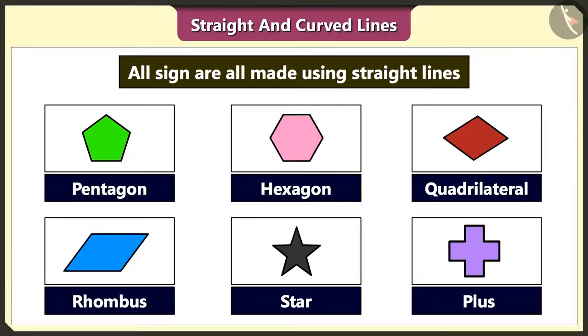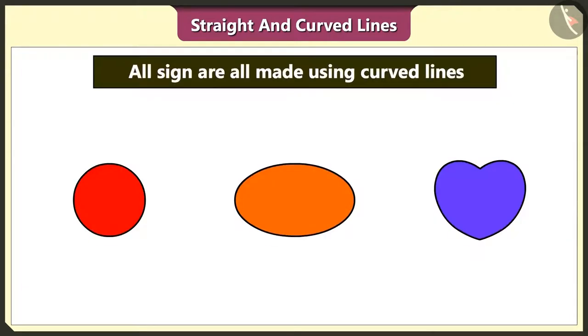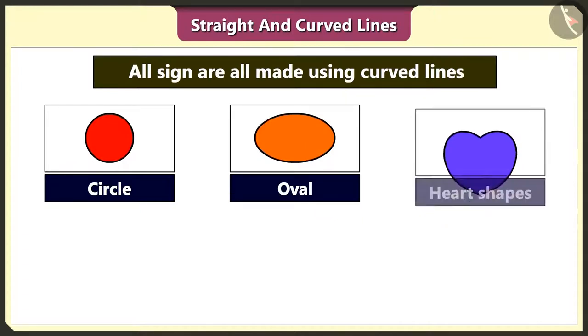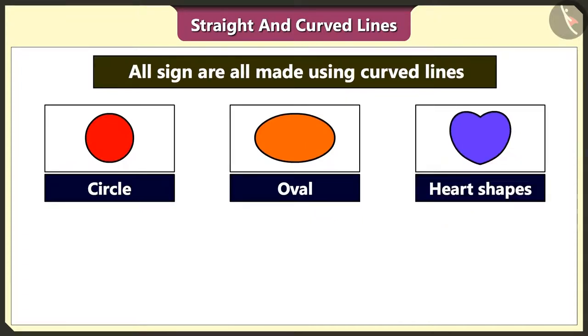We can make several shapes using straight lines. But we can make only a few shapes like circle, oval, and heart shapes using curved lines.